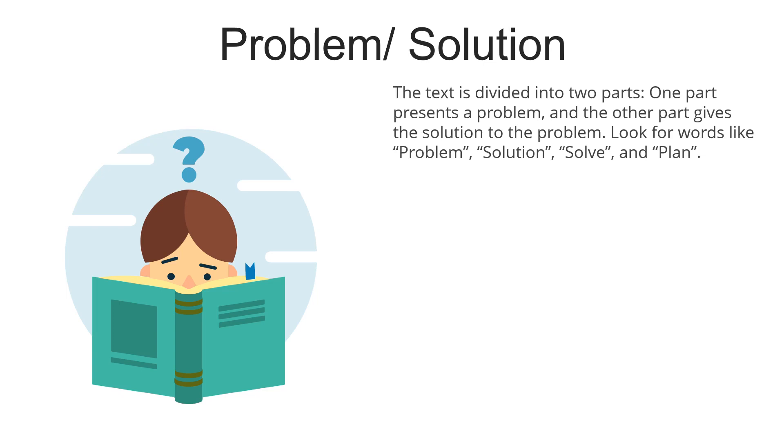We would know that this text is following the problem and solution pattern. And if you, yourself, want to write a problem and solution pattern paragraph or text, you should use or look out for words like problem, solution, solve, and plan, and of course, other transitional words to show how you moved from the problem to the solution.